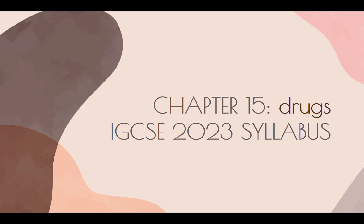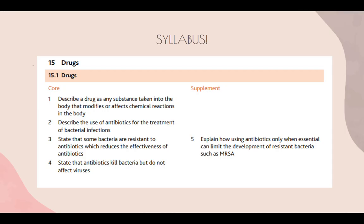Hello everybody, welcome to the IGCSE Passion. Today we will be discussing Chapter 15: Drugs from the IGCSE syllabus for Biology 0610. The points you need to know include: the definition of a drug, the use of an antibiotic, antibiotic resistance, what an antibiotic can and cannot kill, and ways to prevent antibiotic resistance.